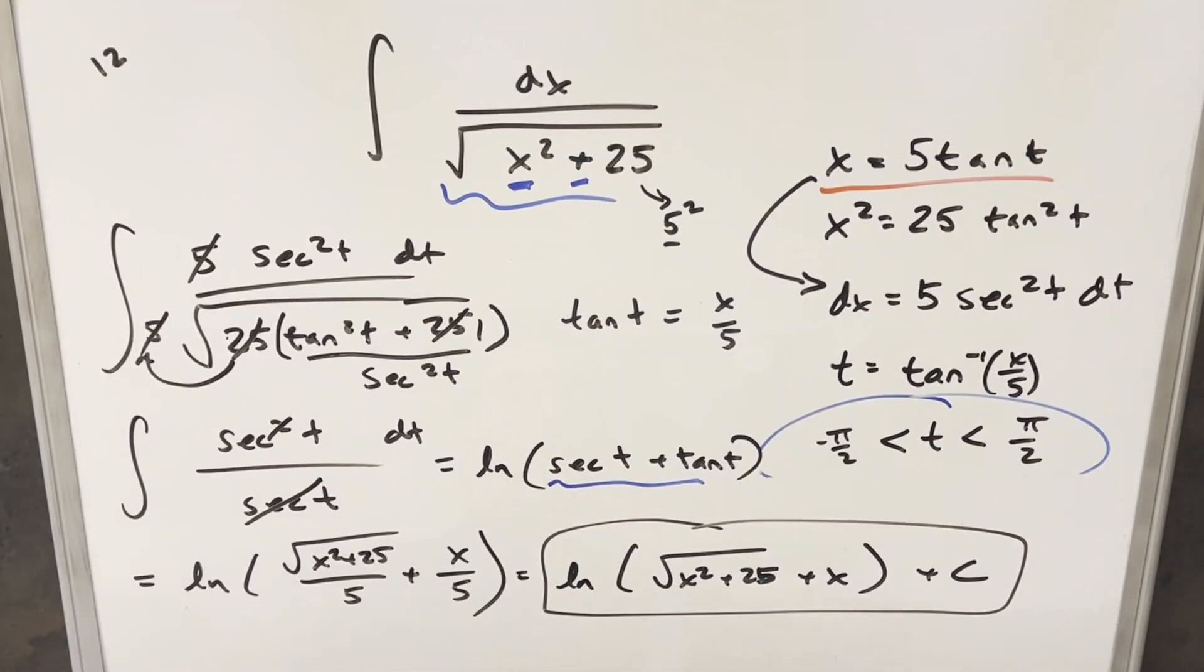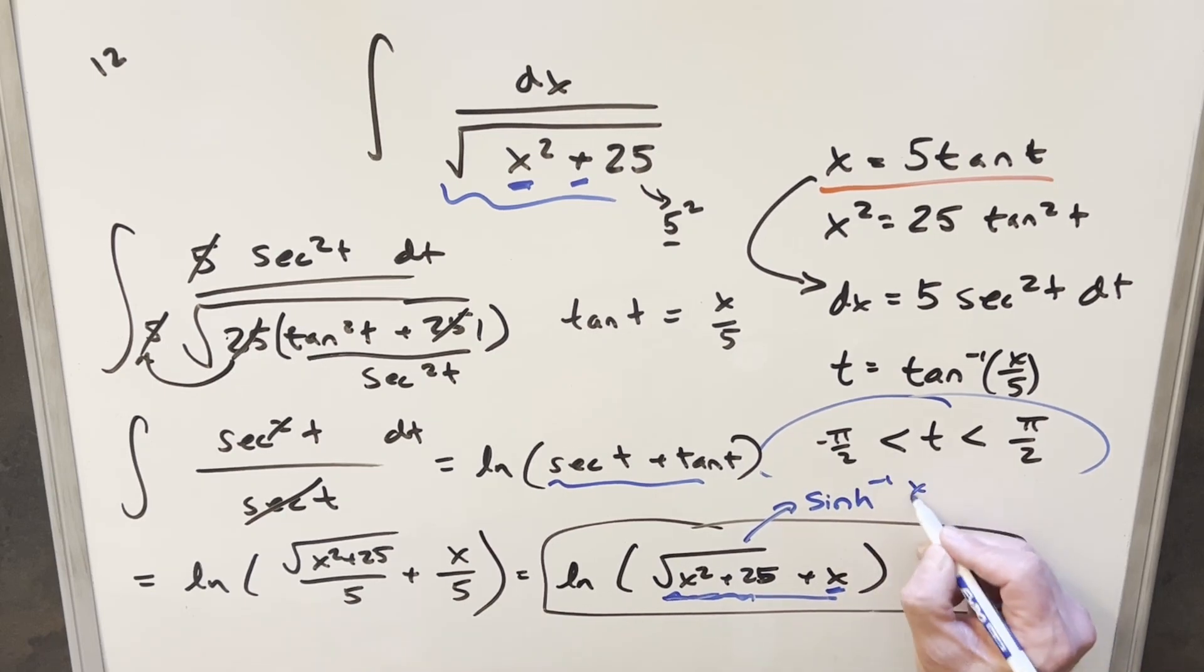And then a couple quick notes on the solution. Again, this is always positive. So again, I mean, we already dropped the absolute value. But if you still had absolute value on here, you could drop it again. Because you'll see that, you'll just see that because we have the x squared here, we're adding something to it. It's always going to be greater even if this is negative over here. So this is always positive. And then also we have another way to write this. We could write this as inverse sinh of x over 5. Okay, so there you have it. Just kind of an interesting look at trig substitution. Thanks everyone for watching. Have a good day.